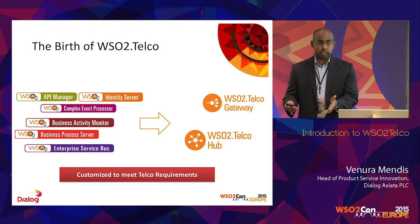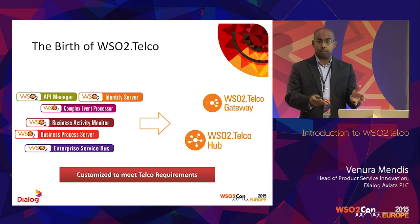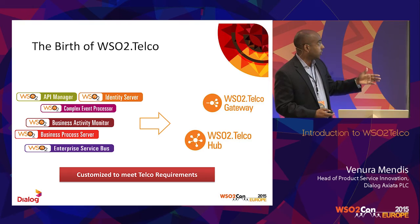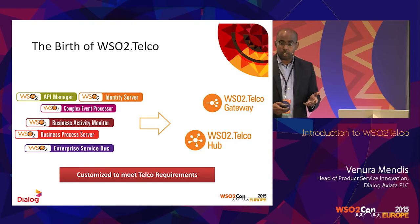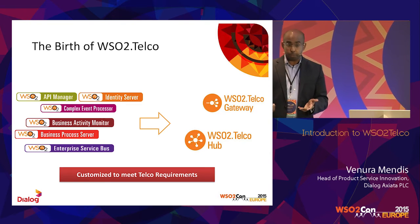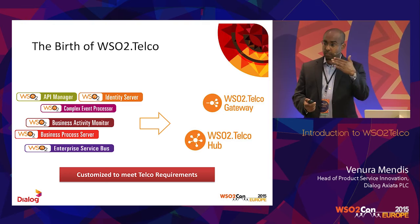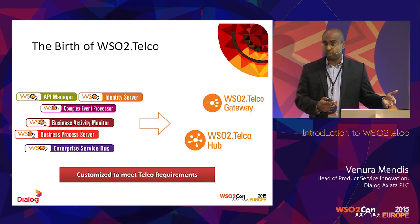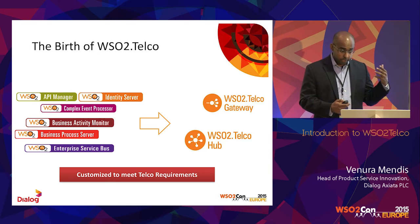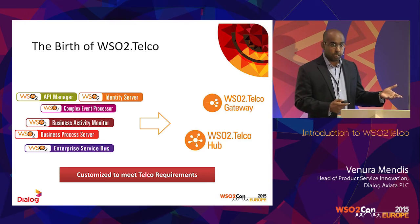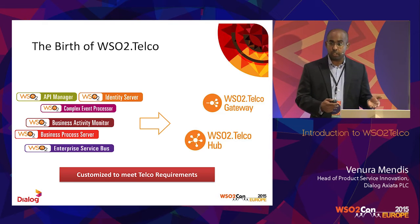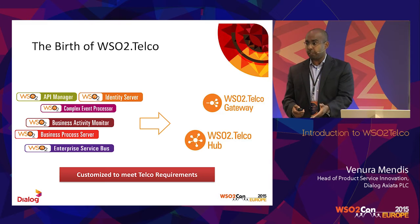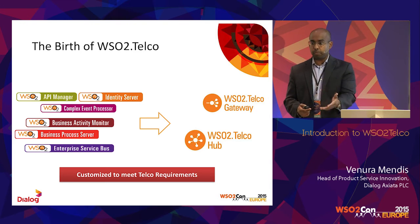This software will be productized, and right now we are making it more generic to be applicable beyond the Axiata market. It uses a number of core WSO2 components: API Manager, Identity Server, CEP, BAM, Business Process Server, and the ESB for integrations. We've customized these components to meet telco requirements — not rewriting them as much as possible, but writing extensions — so that when WSO2 releases a new version of API Manager, we can support a WSO2 Telco API Manager with those same features while bringing in new roadmap improvements.